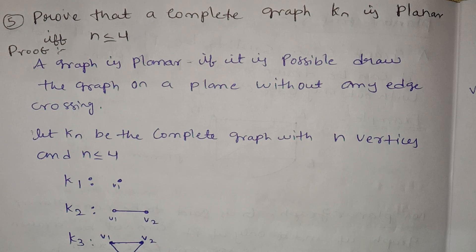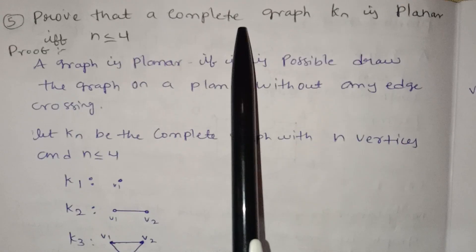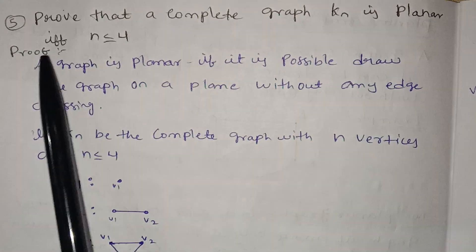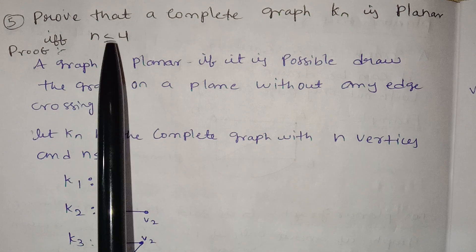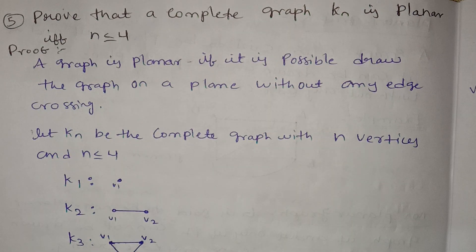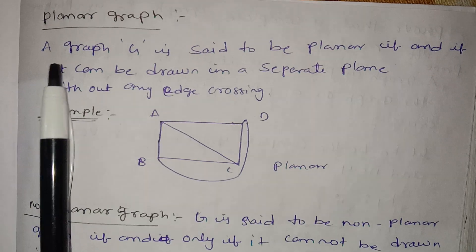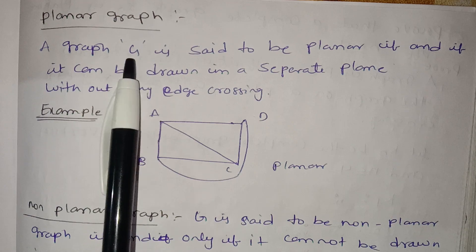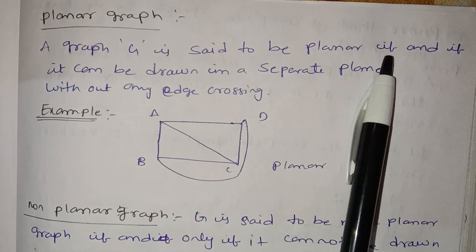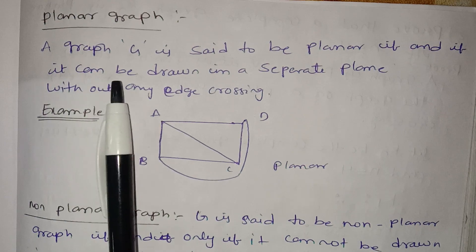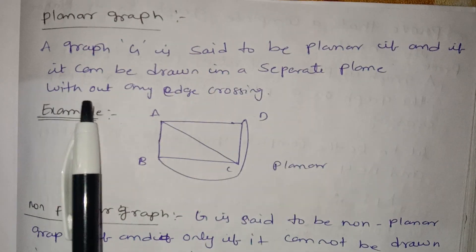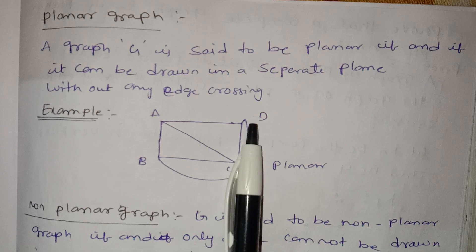Now let's see that a complete graph is planar if n is less than or equal to 4. You already know what a planar graph and non-planar graph is. Now let's see the definition. A graph G is said to be planar if and only if it can be drawn in a plane without any edge crossing.